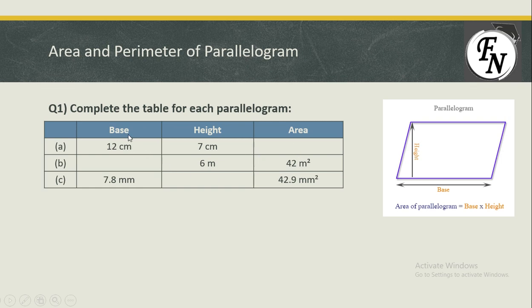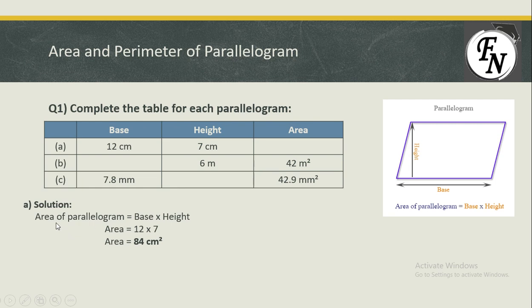The first case is straightforward. We have the base, we have the height, and the formula is: area of parallelogram equals base times height. The height is perpendicular to the base, so plugging in the values: area equals 12 times 7, which is 84 centimeters squared.